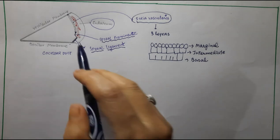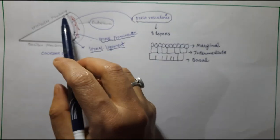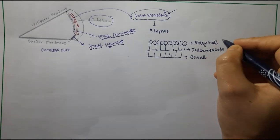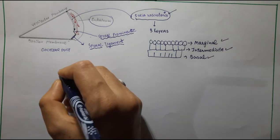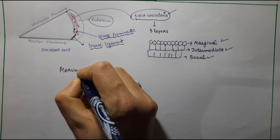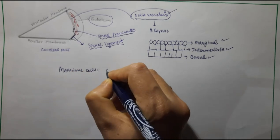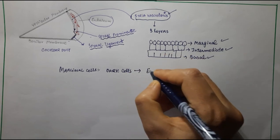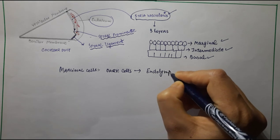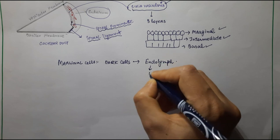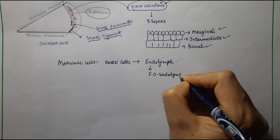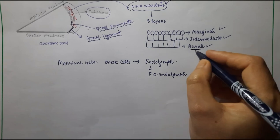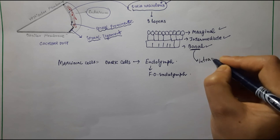Stria vascularis, जो between the spiral prominence and the vestibular membrane होता है, is made up of three layers: marginal, intermediate, and basal. Marginal cells को dark cells भी बोलते हैं और ये endolymph के साथ contact में होती हैं — they are responsible for the formation of endolymph. Basal cells come in contact with intraepithelial capillaries.